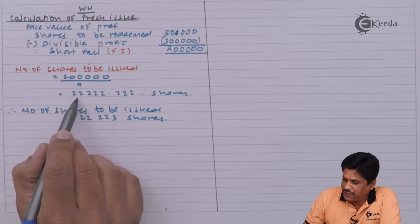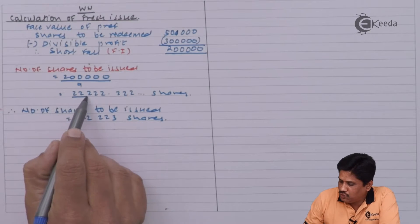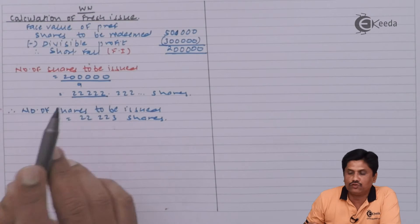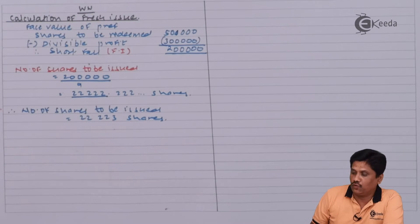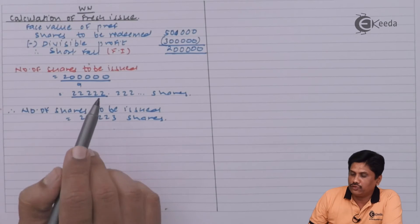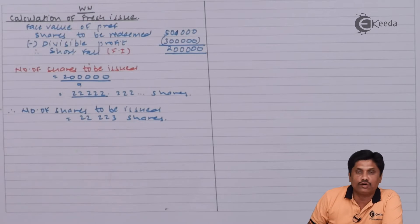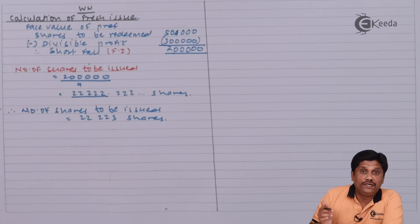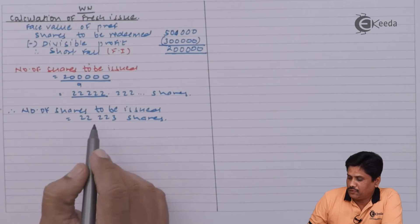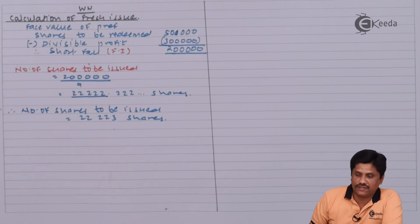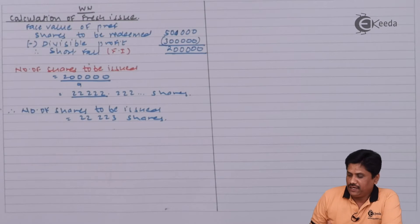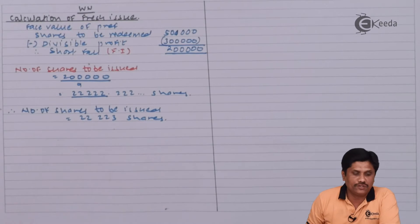We will not say we will issue only 22,222 shares — no. We will issue 22,223 shares. If it is one extra, that is acceptable. Issuing fewer shares would create a problem for the replacement requirement.